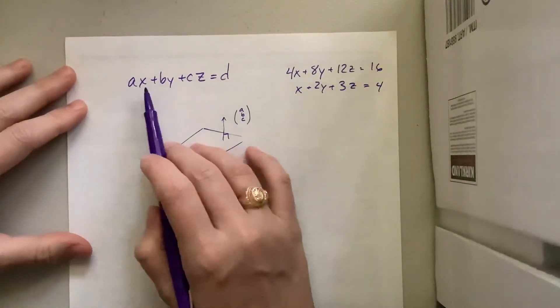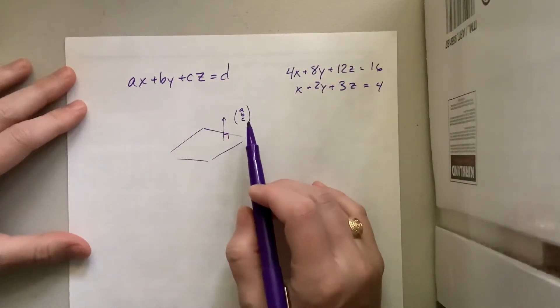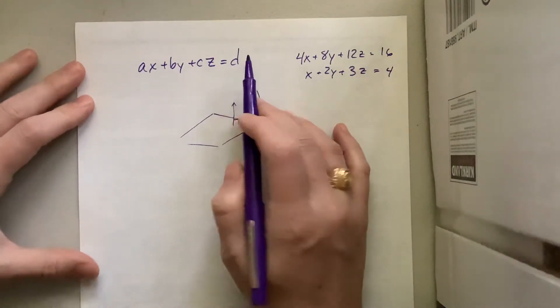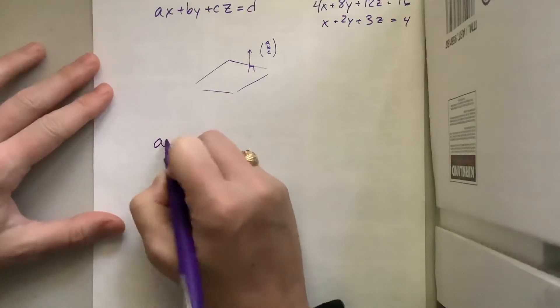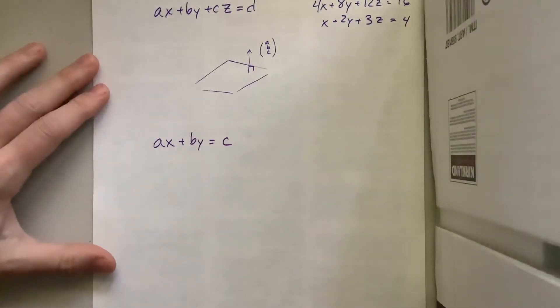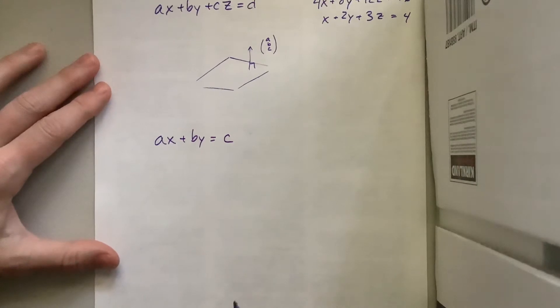So that ABC represents the normal vector. Well, let's think before we try and talk about what D represents. If I have Ax plus By equals C, that's the standard form of a line.